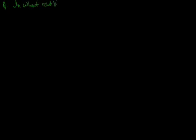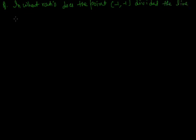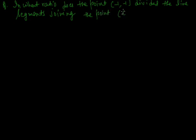Next problem: in what ratio does the point (-1, -1) divide the line segment joining the points (4, 4) and (7, 7)?